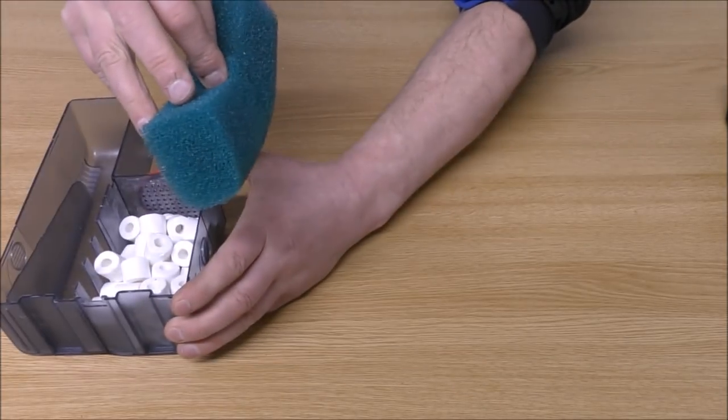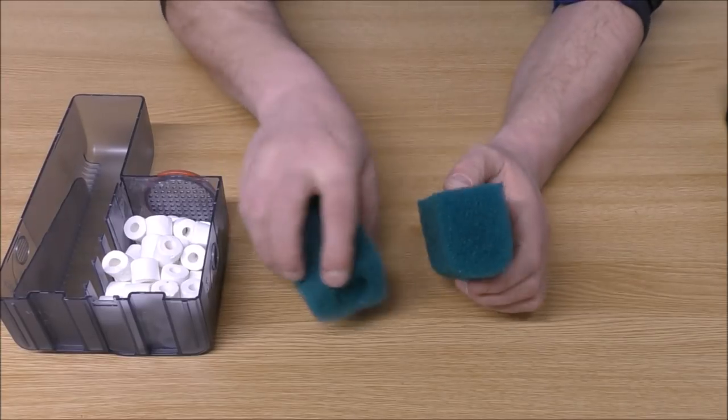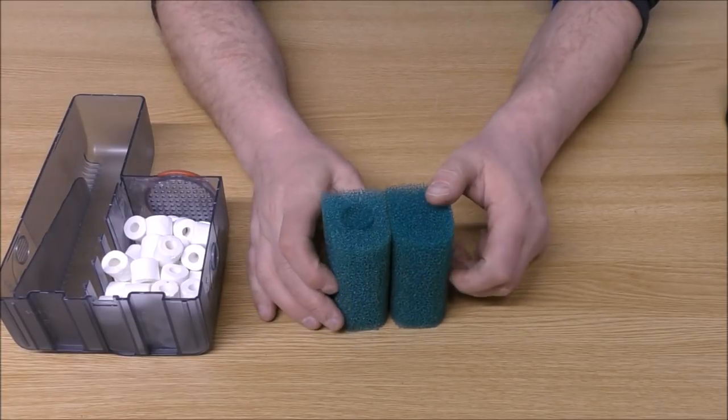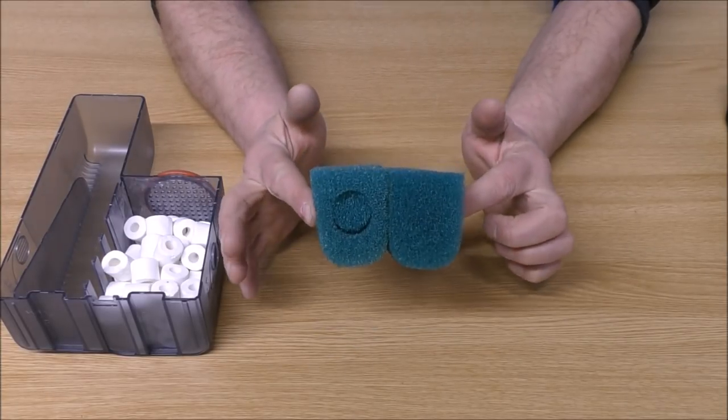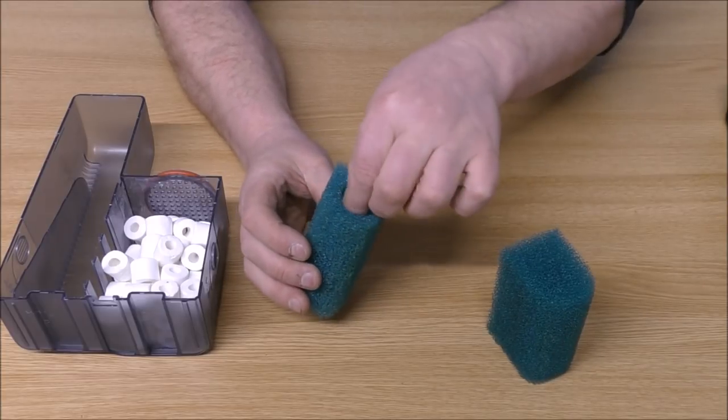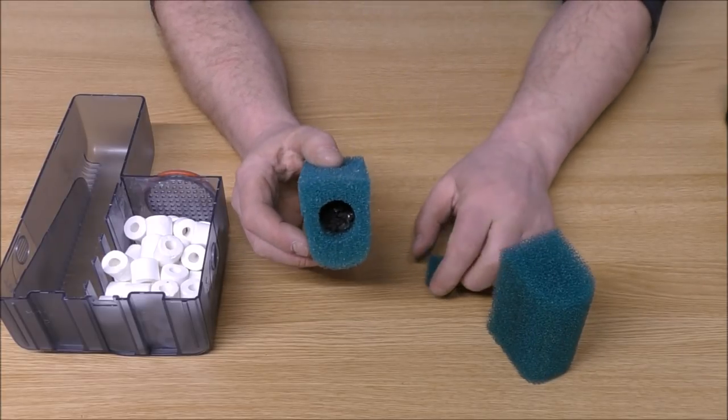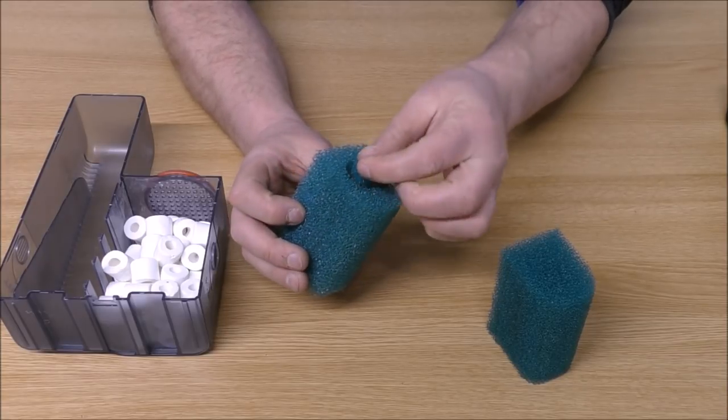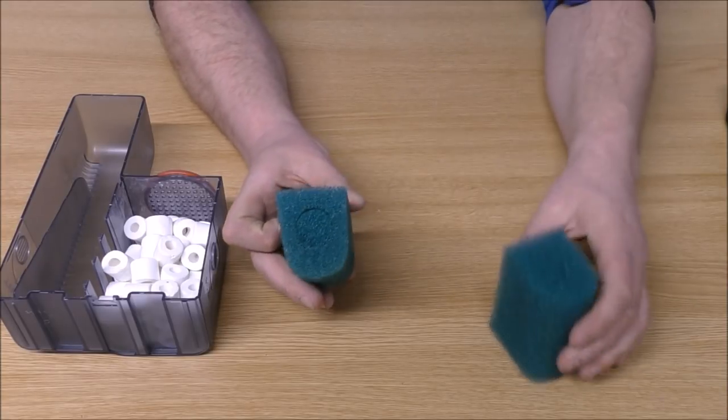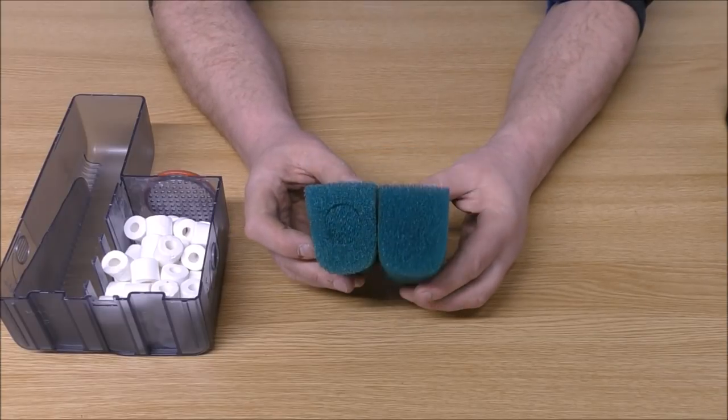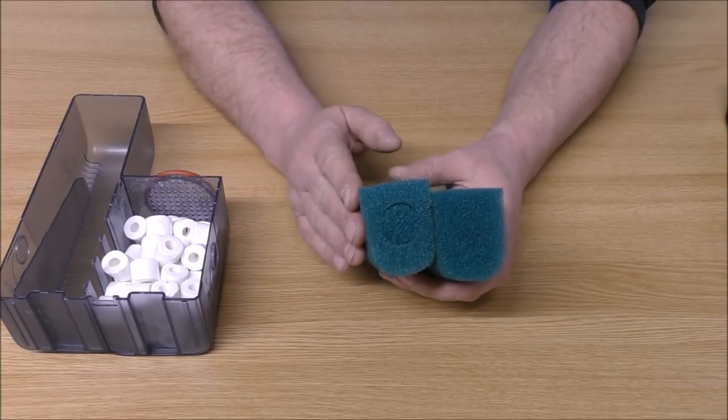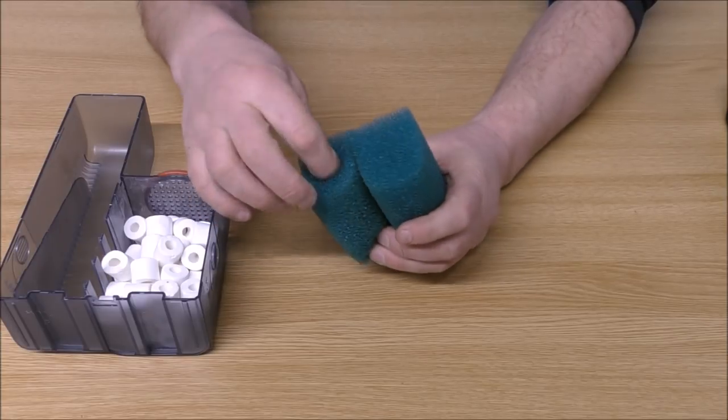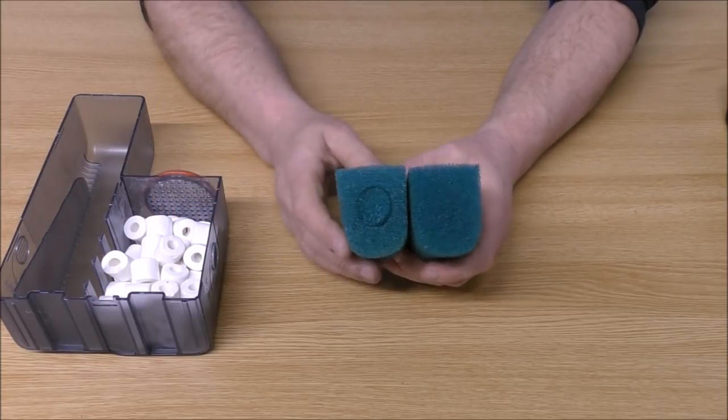Let's take a look at these foams. Now these foams are exactly the same. You notice they're rounded on one end. And each one has a hole in the middle. And in the middle of there we've got carbon. So really in essence what we're provided with here is mechanical, chemical and biological filtration.